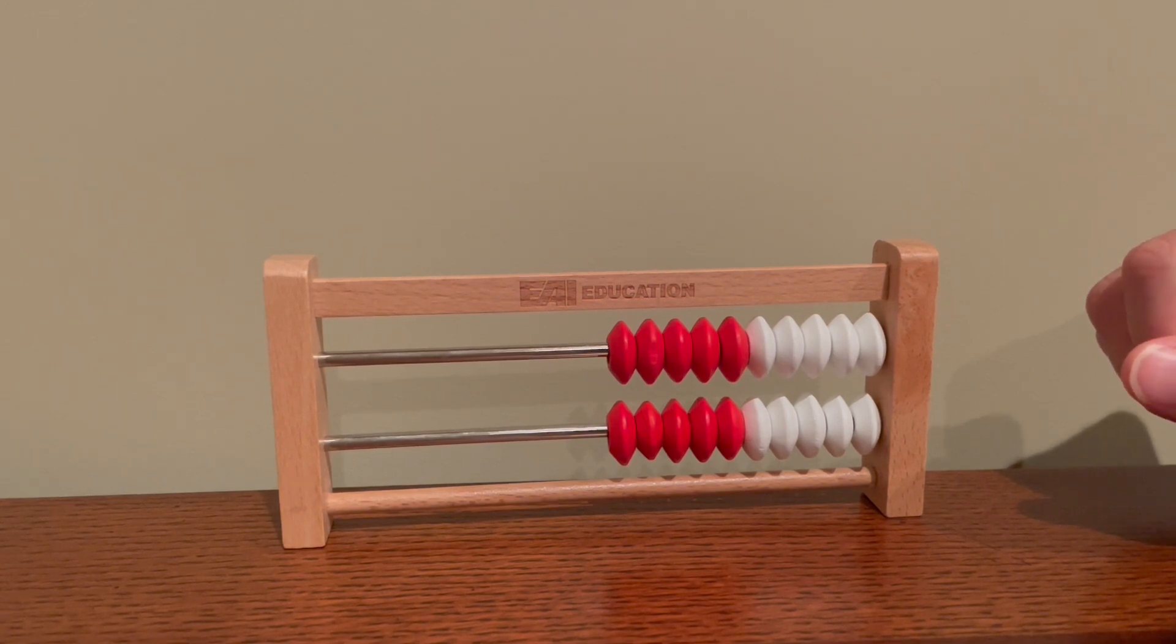Number racks help students develop part-part-whole relationships and see spatially that numbers are made up of various parts of other numbers.